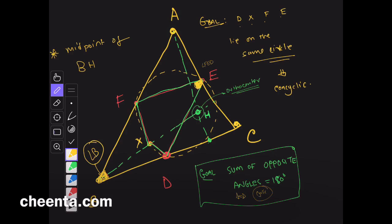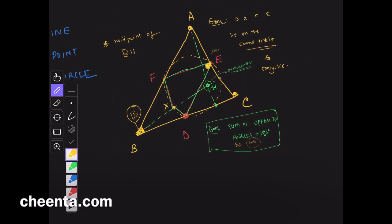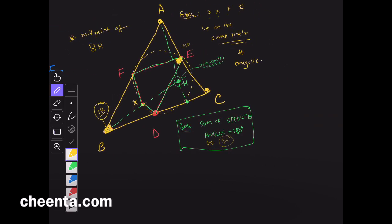Because BFED is a parallelogram. So, angle FED is equal to angle B, because BFED, there is this quadrilateral right here, BFED is a parallelogram.